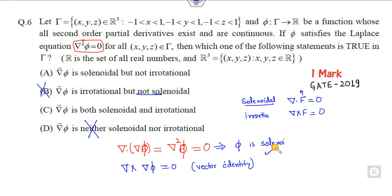Now checking the curl: we know by vector identity that the curl of the gradient of f is always zero. So the field is also irrotational. This means the right answer is option C.